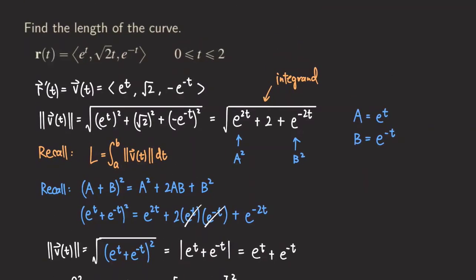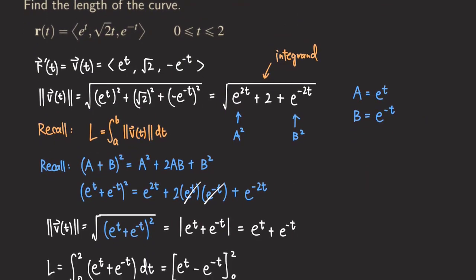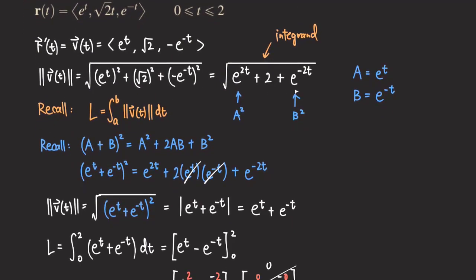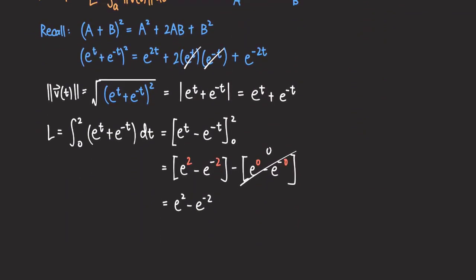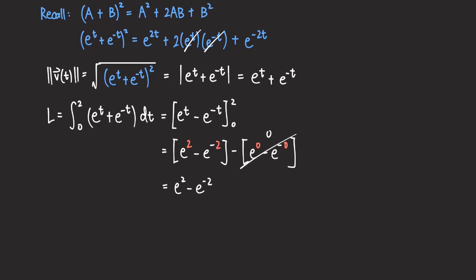The key trick here is that we obtained a perfect square under the square root, which cancels with the square root, making integration straightforward. Of course, there's no guarantee you'll always get a perfect square. In other cases you may need a u-substitution or a trig substitution, and sometimes there is no elementary antiderivative at all — in that case you can use numerical methods to approximate the value of the integral. That's it for this problem; I'll see you next time.